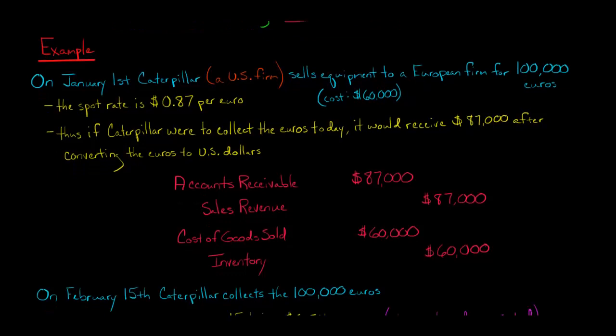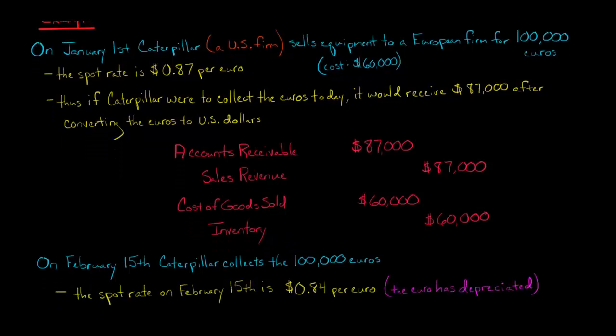So let's not focus on that. Let's focus on this $87,000 that is in receivables, because we're going to have a change. On February 15th, Caterpillar collects the 100,000 euros, but on February 15th, the spot rate is now different. Now it is 84 cents per euro.